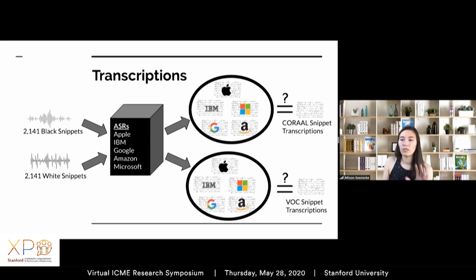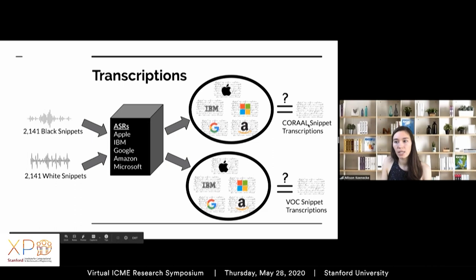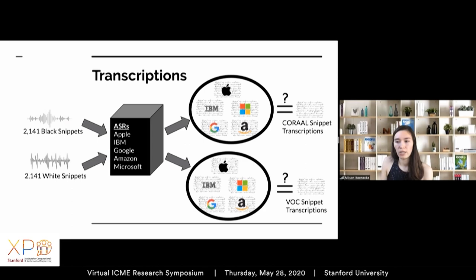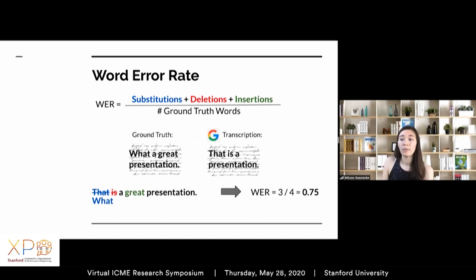Our overarching goal is to compare ASR performance on black speech versus white speech. We propensity-matched black and white voice snippets by age, gender, and voice clip duration. For each sample, we feed the audio into one of the ASR systems, which generates a speech-to-text transcription, which we then compare to the human-generated ground truth transcription. For example, we compare the Apple transcription of a black audio clip to the corresponding CORAAL transcription.